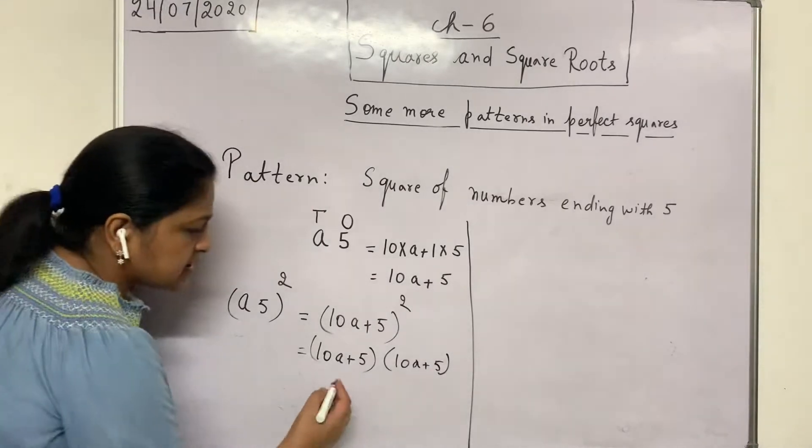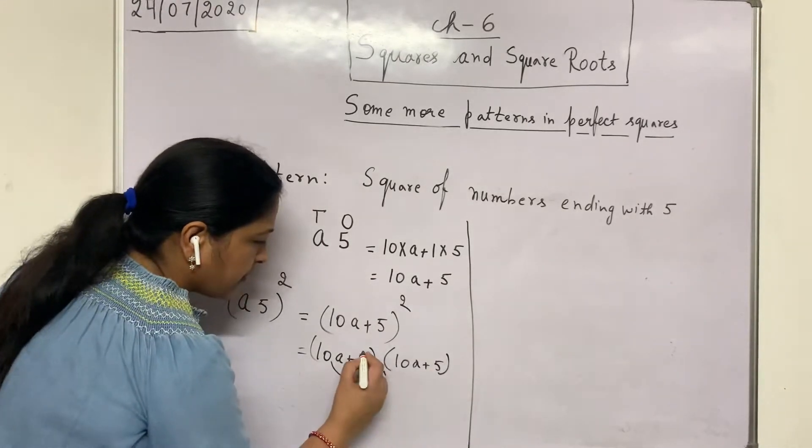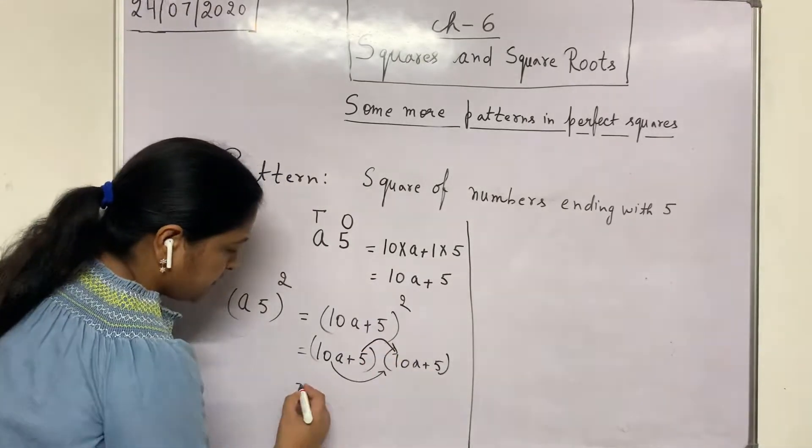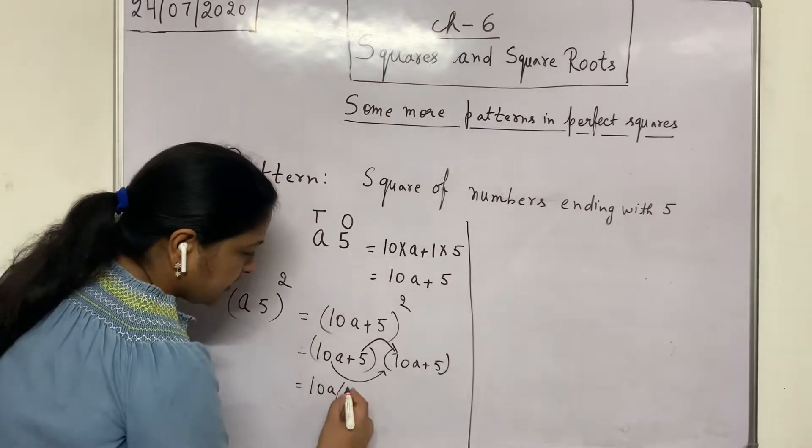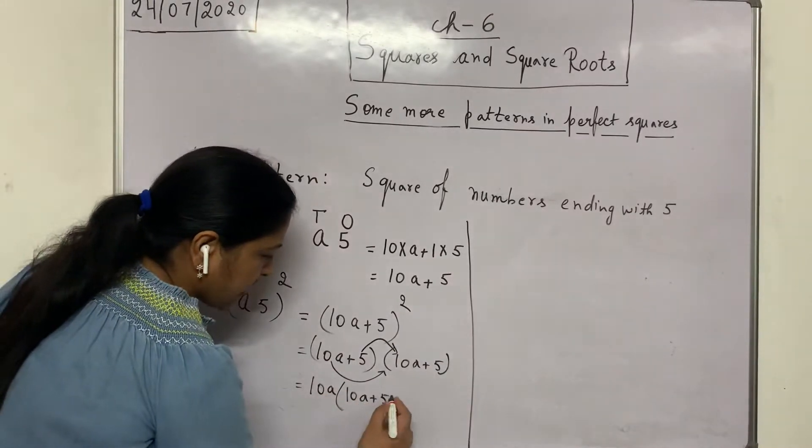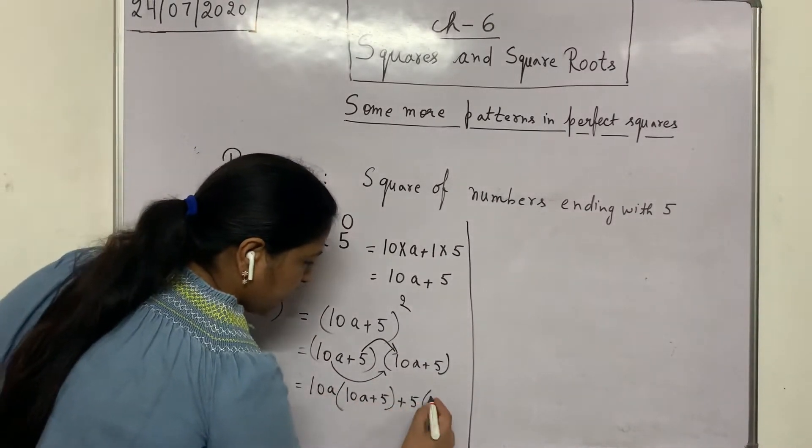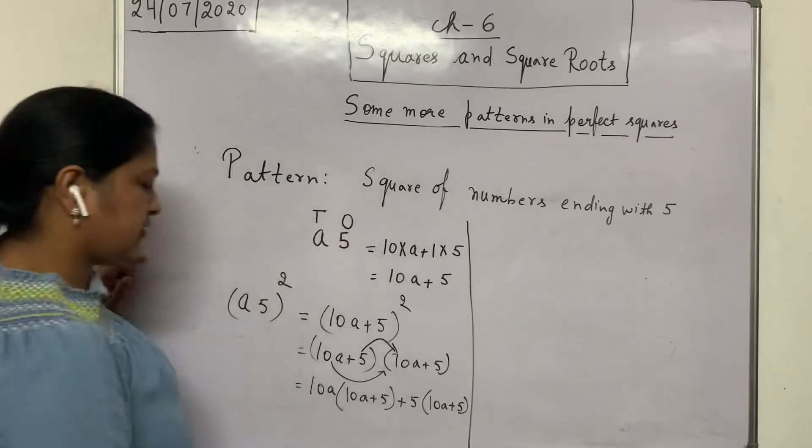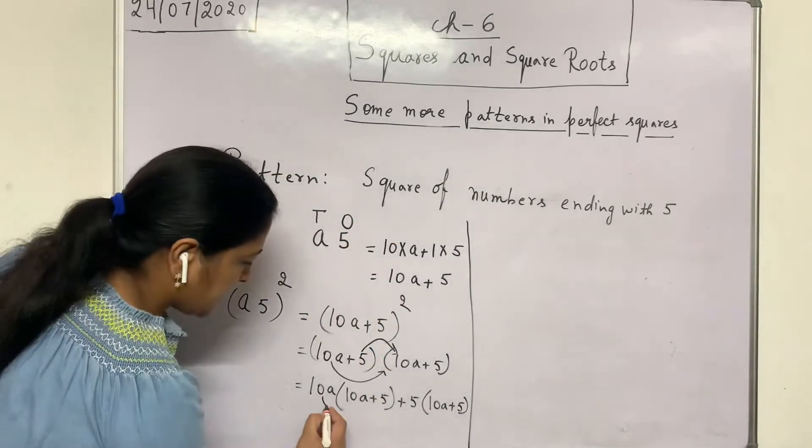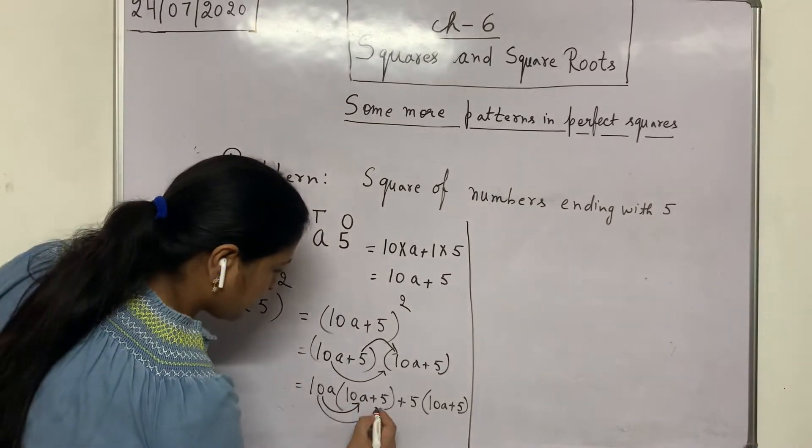After that use the distributive property to open it. So it will be 10a multiplied by 10a plus 5 and plus 5 into 10a plus 5. Then again applying distributive property.